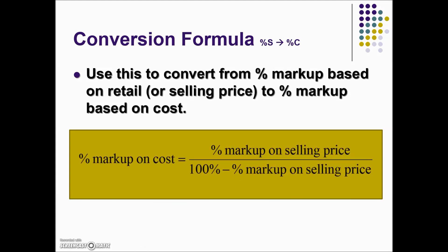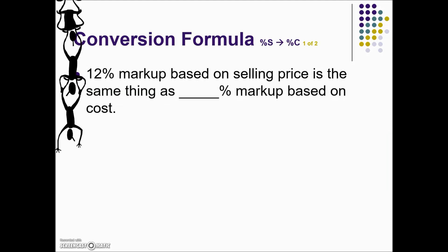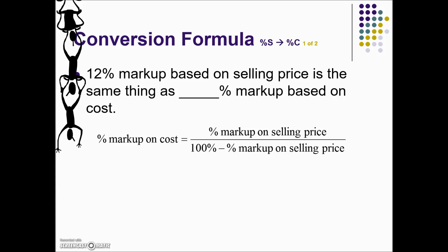We can also go the other direction. If we are given a markup based on selling price, we use the following formula to determine an equivalent percent markup on cost. Here we have an example: given 12% markup based on selling price is the same as what percent markup based on cost? We'll use our converting markup percent on selling price to markup percent on cost formula, where we need to know our markup based on selling price — we're given that value in the problem. Notice a slight difference in the formula: the denominator is a subtraction rather than addition, compared to when we go from percent cost to percent selling price. So simplifying the denominator, 100% minus 12% is 88%.